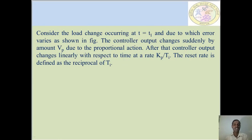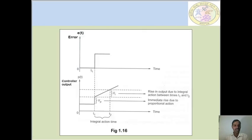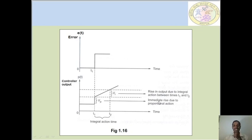After that, the controller output changes linearly with respect to time at a rate Ap/Ti. The reset rate is defined as the reciprocal of Ti, as shown in this graph where error e(t) over time increases both vertically and horizontally from t1. The controller output p(t) over time is also shown. Between times t1 and t2, Vp corresponds to the immediate rise due to proportional action, and Vp shows the rise in output due to integral action.